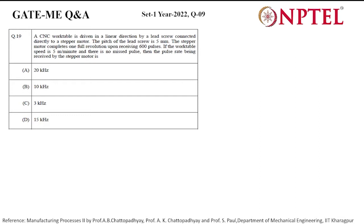A CNC work table is driven in the linear direction by a lead screw connected directly to a stepper motor. The pitch of the lead screw is 5 mm. The stepper motor completes one full revolution upon receiving 600 pulses. If the work table speed is 5 meter per minute and there is no missed pulse, then the pulse rate being received by the stepper motor is.